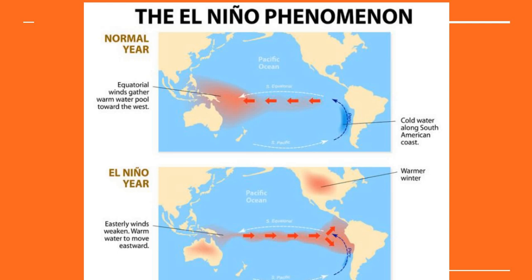This is a repeating cycle — I think it happens like every 12 or 13 years. It's something that naturally changes the weather patterns, and hurricane season, for example, gets a lot worse.